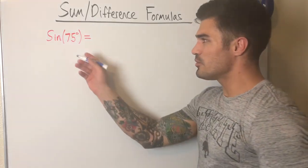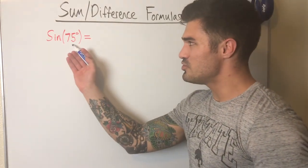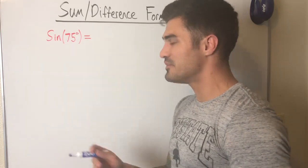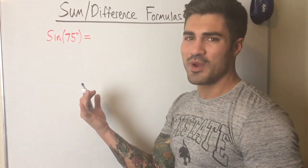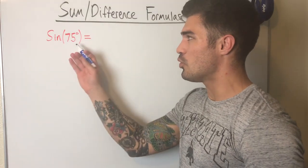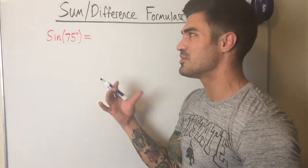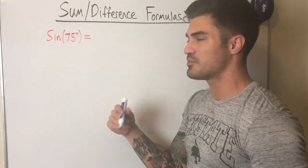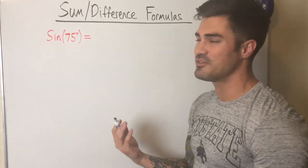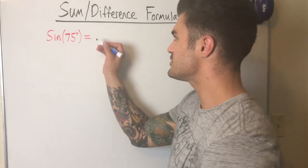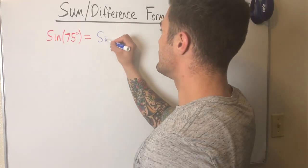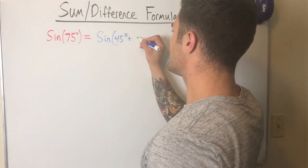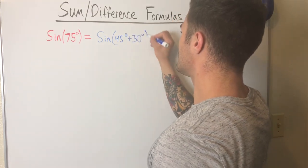I'm looking for two angles that add or subtract to get 75 degrees. There's more than one way to do this, but the two that jump out are 45 and 30 — both are on the unit circle and they add up to 75 degrees. So I can break this up into sine of 45 degrees plus 30 degrees.